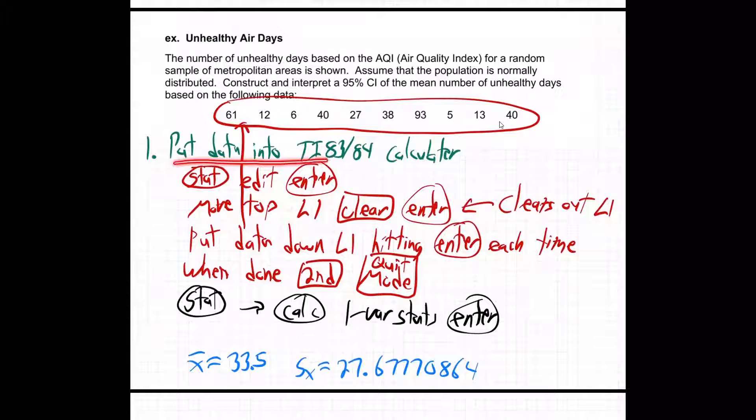We have to put the data into the TI-83 or 84 calculator. Here's all the steps you need. You hit the stat button, then you're on the edit menu, hit enter. Move to the top where L1 is. That's an L, L1. Press clear and enter, and that clears out L1. And then you put the data down L1, hitting enter each time. And then when you're done, you hit second and quit, the mode button, which has quit above it.